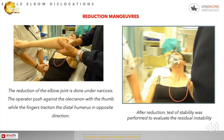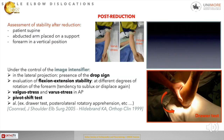Regarding the reduction maneuver: reduction of the elbow joint is performed under anesthesia. The operator pushes against the olecranon with the thumb while applying finger traction to the distal humerus in the opposite direction. After reduction, a stability test is performed to evaluate any residual instability.